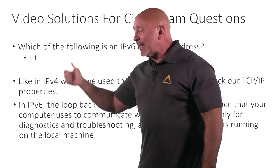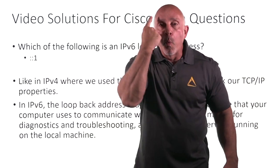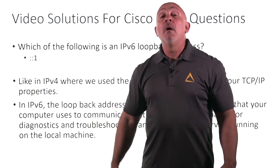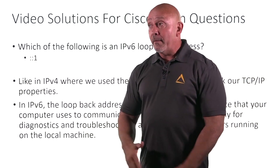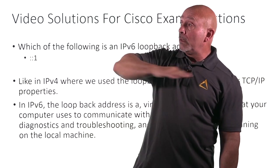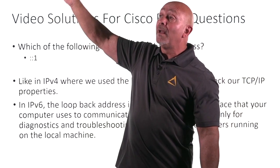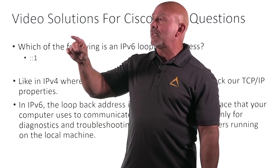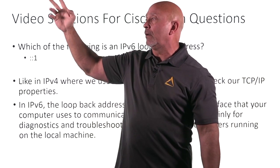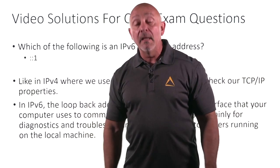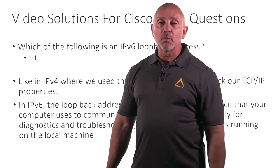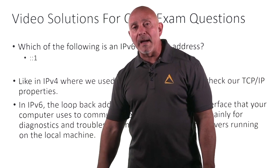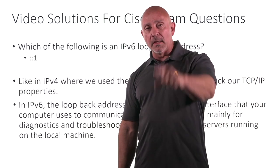In IPv6 there is only one loopback address, but in IPv4 it was the entire 127.0.0.0/8 range — any address from 127.x.x.x, like 127.10.15.100, will reply if your TCP/IP is working correctly. That's your loopback for IPv6. See you in the next one.